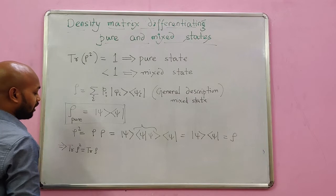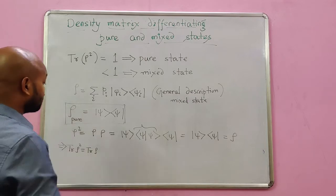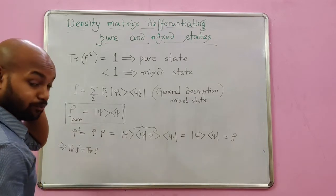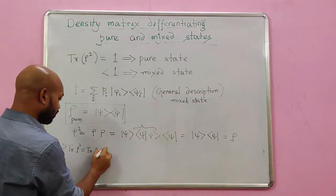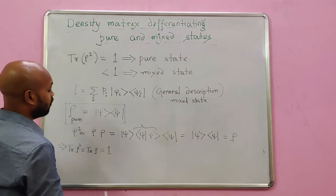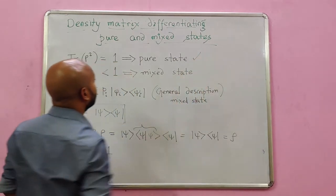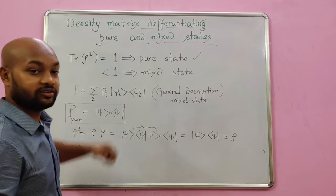And we know that rho has a unit trace. That's the definition of rho, in fact, or one out of the three important properties of the density matrix, that trace is 1. So this is why we say if trace of rho squared is 1, then it's a pure state.